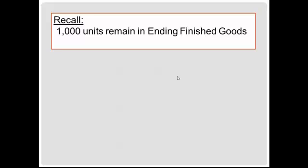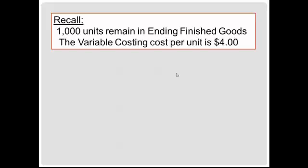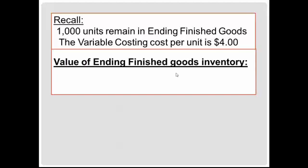Now we'll value the ending finished goods under variable costing. There are 1,000 units remaining — we had 2,000 to begin with, made 12,000 more, but sold 13,000, so 1,000 units remain. The variable cost per unit is $4, so the value of ending finished goods inventory under variable costing will be 1,000 units times $4 per unit, or $4,000.